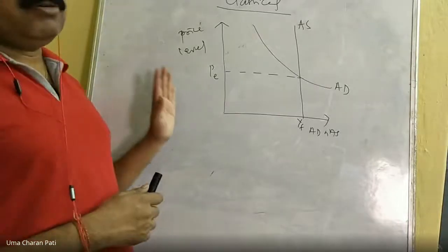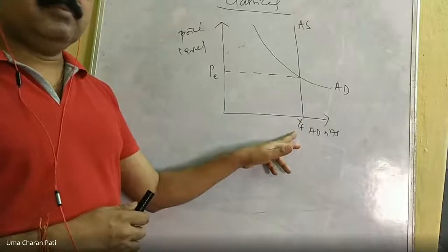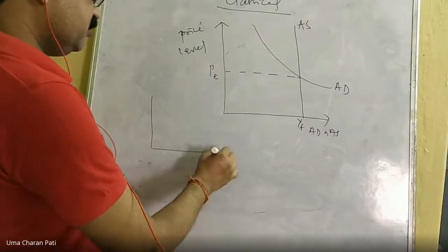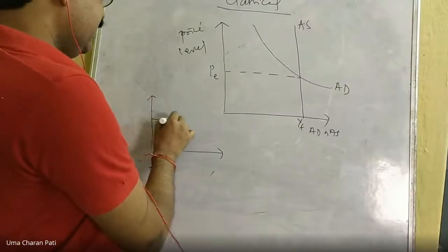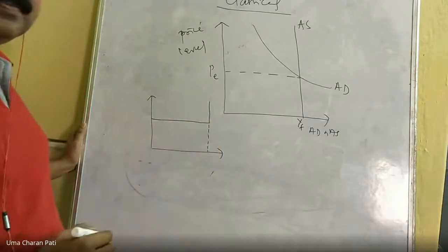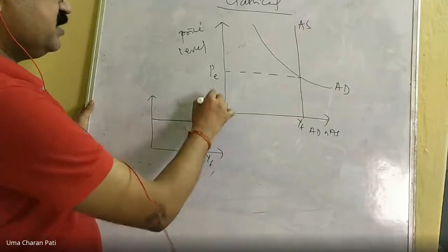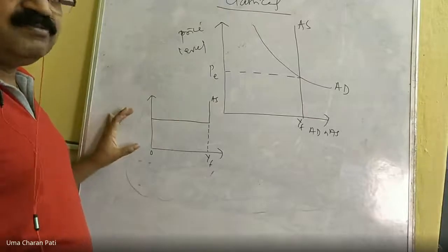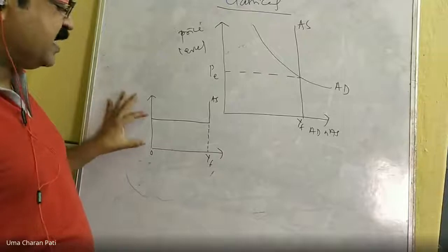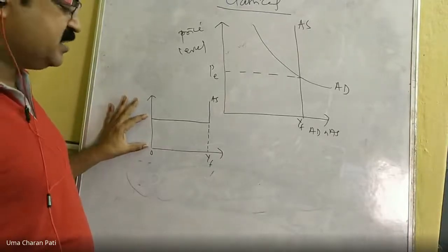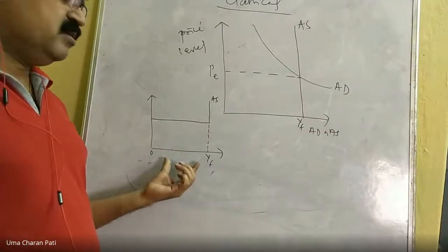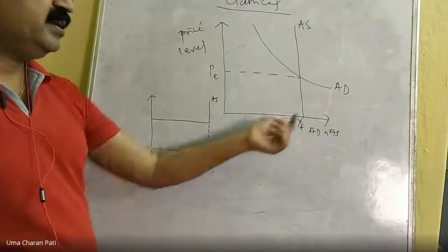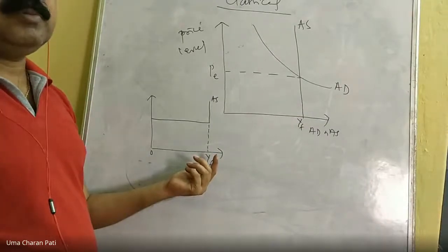Keynes took a different view. He represented the aggregate supply curve as a horizontal straight line — not vertical. The price level in the economy is given and fixed. At this price level, the output the economy actually produces is less than the potential full employment output. Full employment output, as per classical theory, is unattainable by any economy — whether developed, underdeveloped, or developing. Every economy has to contend with an output less than the full employment output.